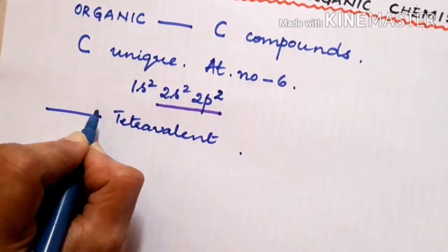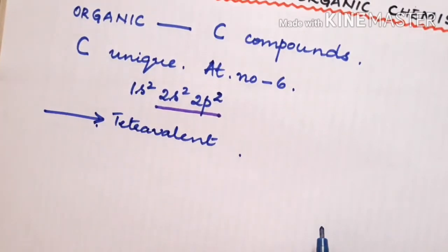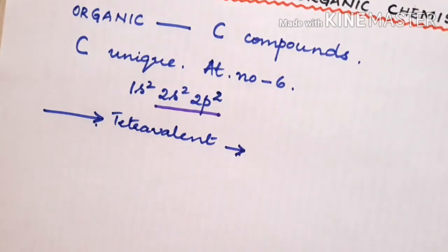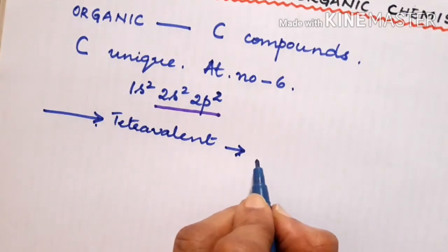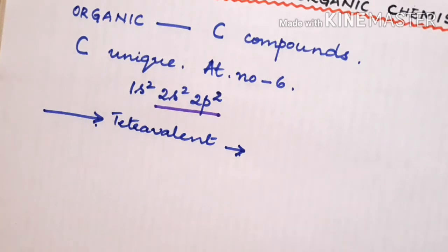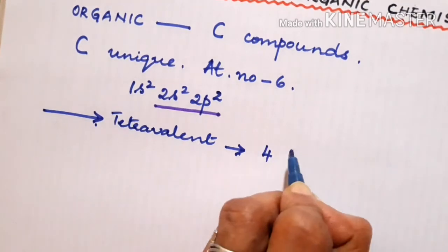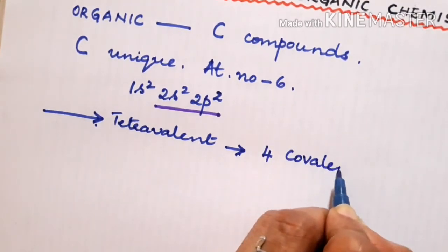The first point is carbon is tetravalent. That means it has 4 valence electrons and to satisfy the octet, it requires 4 more electrons and so it will form 4 covalent bonds.